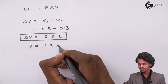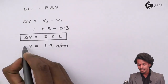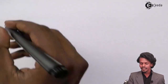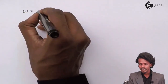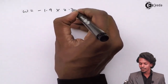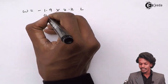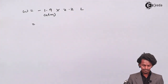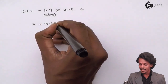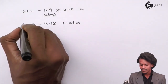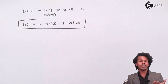The pressure P = 1.9 atmosphere. Substituting into W = −P·ΔV: W = −1.9 × 2.2 = −4.18 liter-atmosphere. This is the first requirement — the work done expressed in liter-atmosphere.